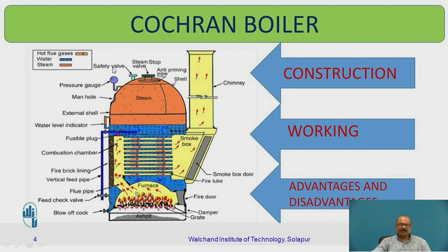There is also a safety valve provided here. While studying this Cochran boiler, just compare it with your household pressure cooker, which also has a safety valve — the name itself indicates its safety purpose. Below the safety valve there is a pressure gauge, which indicates the pressure of the steam inside the shell.